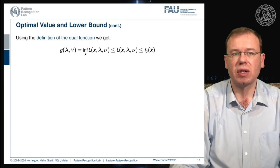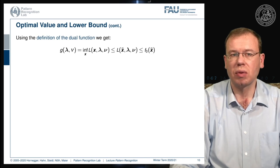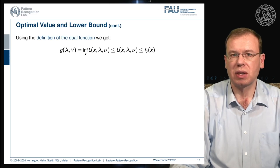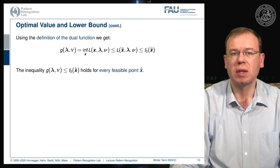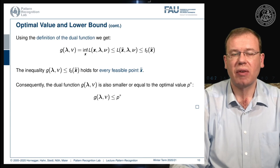Using the definition of the dual function, we can see that g(lambda, nu) — the infimum over the Lagrangian — is bounded above by the Lagrangian evaluated at x̃, and there is an even higher bound f0(x̃). So the inequality that f0(x̃) ≥ g(lambda, nu) holds for every feasible point x̃, meaning the optimal value p* must also be larger than the Lagrange dual function.